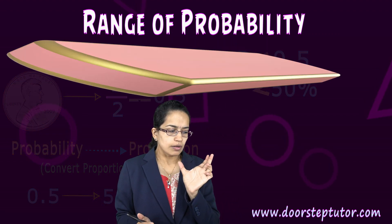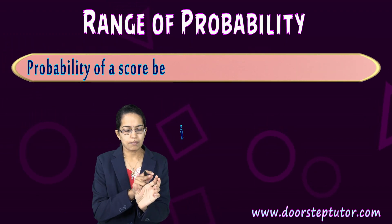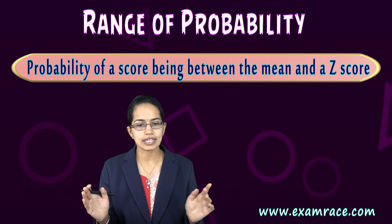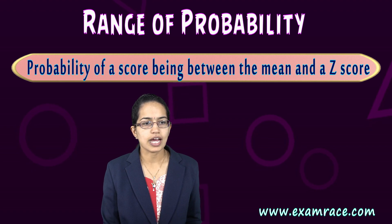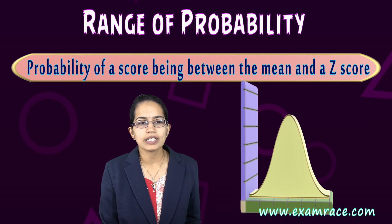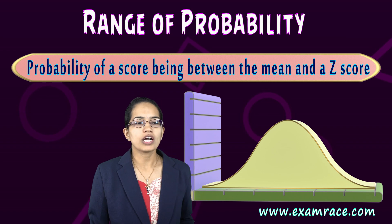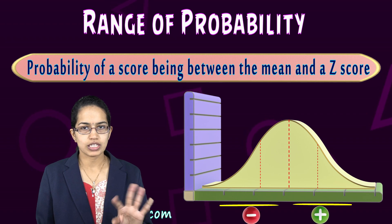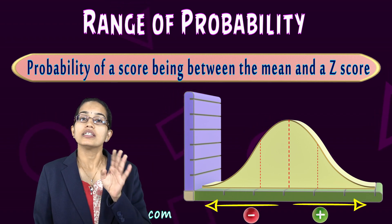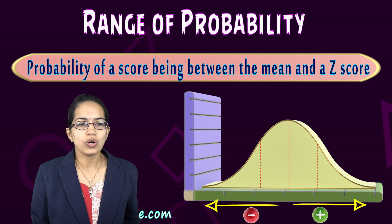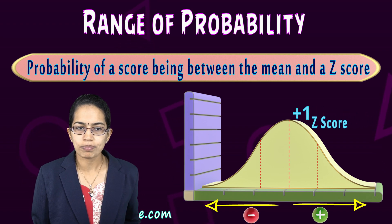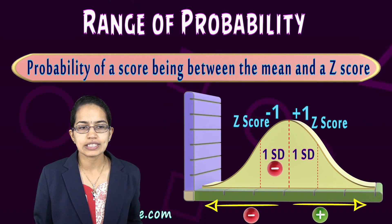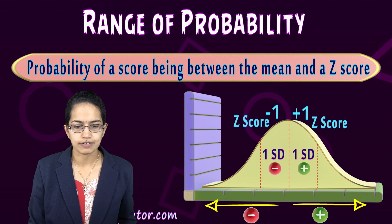The probability of a score is also understood between the mean and the Z-score. When we talked about the normal distribution curve in our previous section, we focused on the one standard deviation plus/minus variation. With the standard deviation above and below the mean, you have the Z-score — plus 1 Z-score and minus 1 Z-score in the case of one standard deviation.